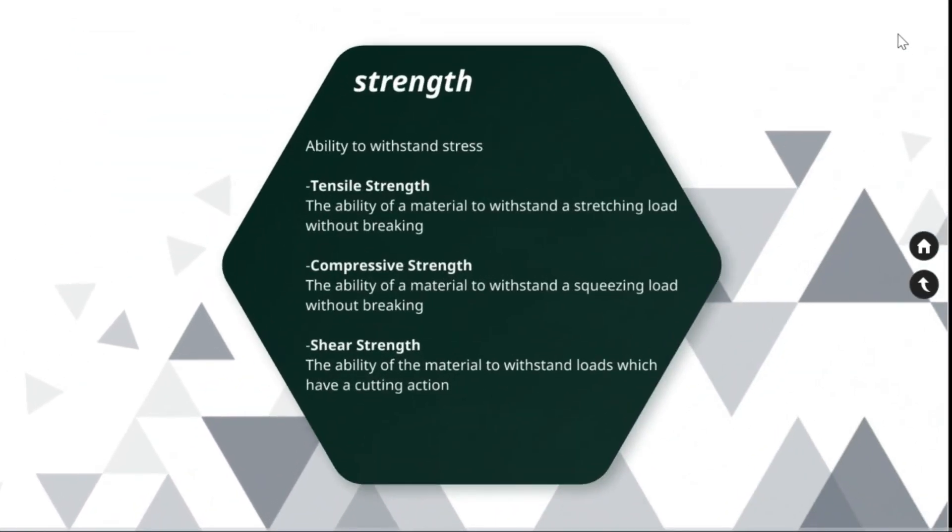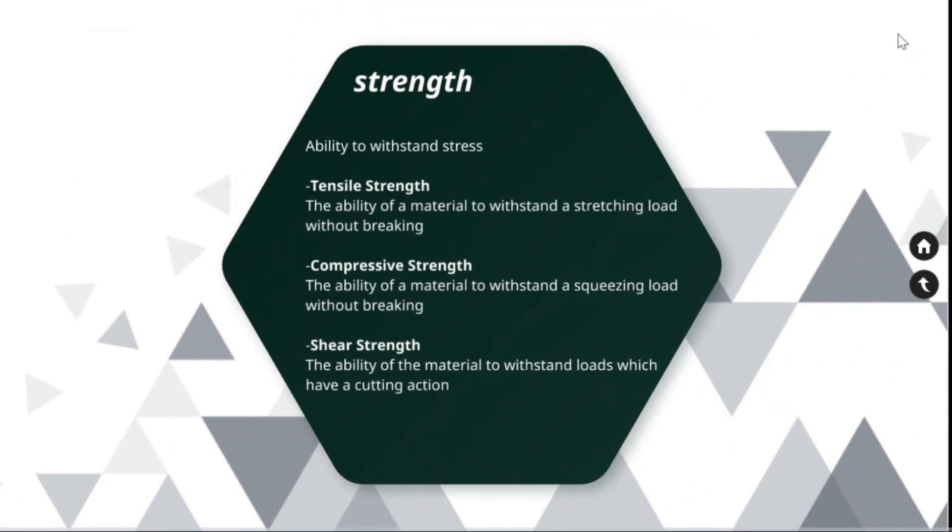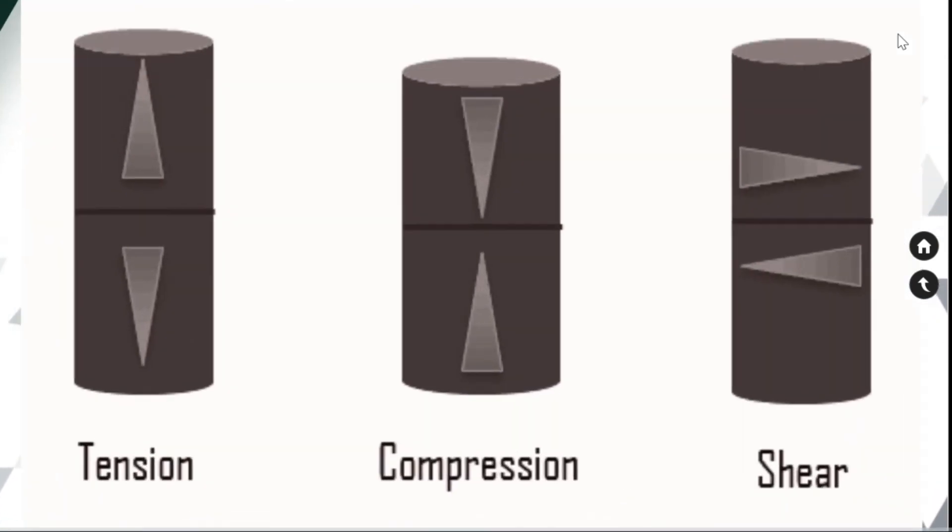Strength of a material is the ability of a material to withstand stress without failure or the capacity to withstand destruction under the action of external load. There are multiple variants of stresses acting on the material when it is in use. The three common types of stresses acting on the materials are tensile stress, compressive stress and shear stress.